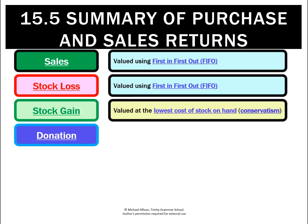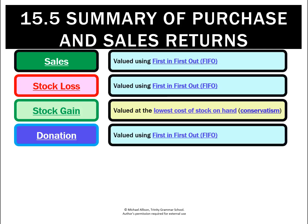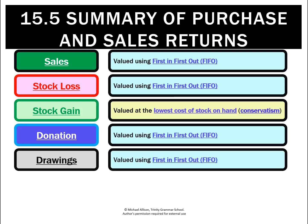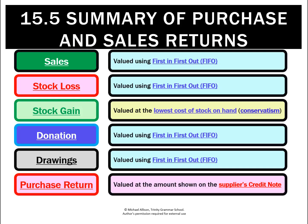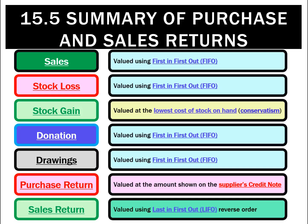When we donated stock for advertising purposes, we valued that at FIFO. When we took out drawings for ourselves, we also valued that at FIFO. The two new ones we learned this chapter: for a purchase return, we value it at the amount shown on the supplier's credit note; and for a sales return, we value it at last in, first out in reverse order.